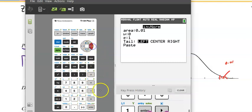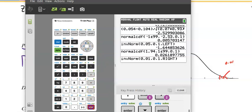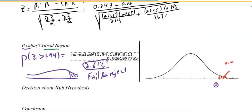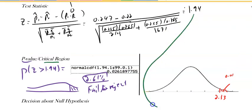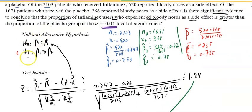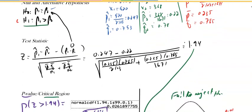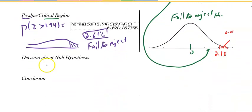The cutoff region is 2.33. Do we notice that 1.94, if this is 0, doesn't fall in there? So we fail to reject the null hypothesis. What does that mean? The claim is asking if it's bigger; it's not supporting it. It seems they are the same according to the sample. So our conclusion: we fail to reject the null hypothesis.